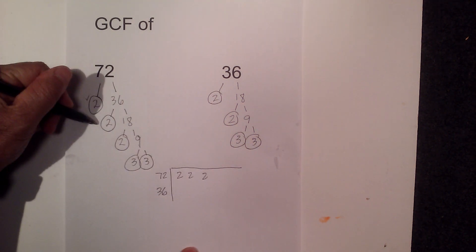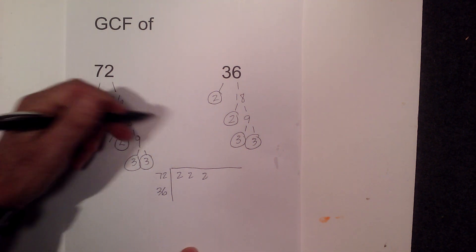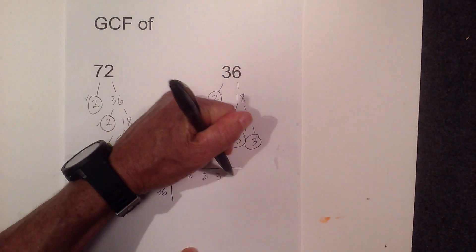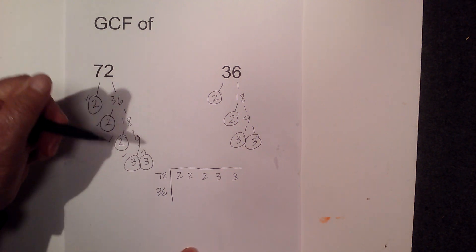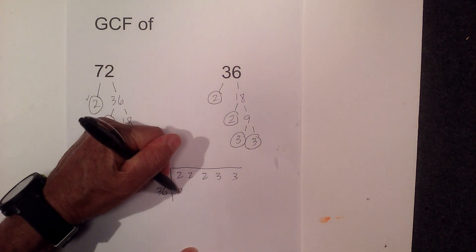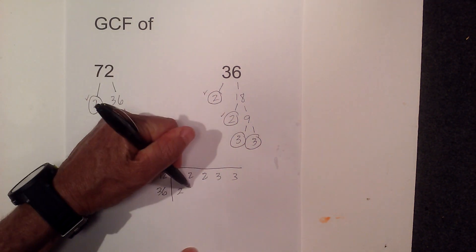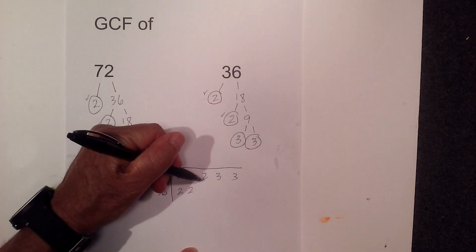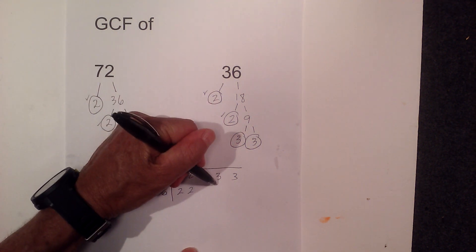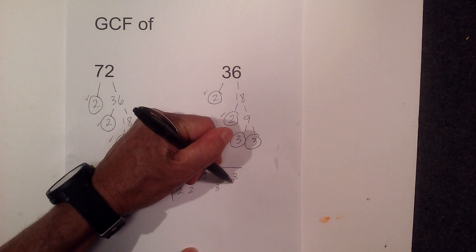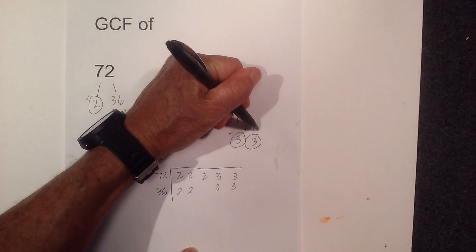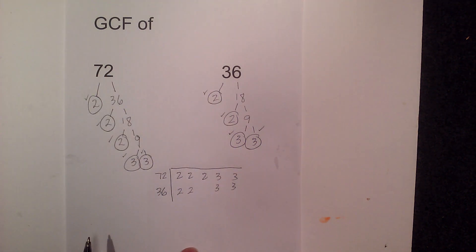So I have 2, 2, 2, and if you want to be really careful you can put a check by each one. And then there's a 3. And then for 36 I'm going to go 2, 2, I'm going to skip a space because I don't have a 2, a 3 and a 3. So I will put a check by all of this.